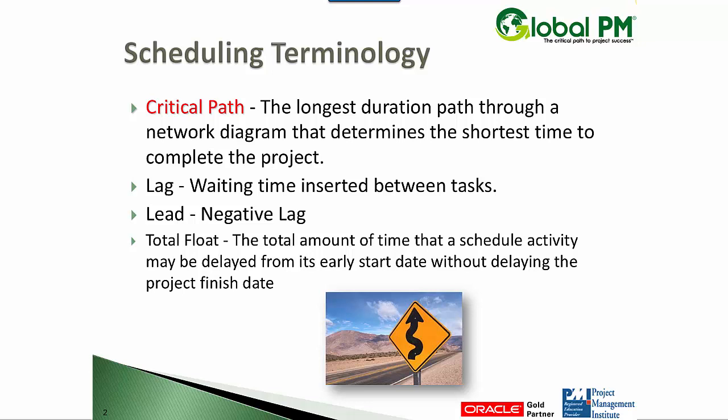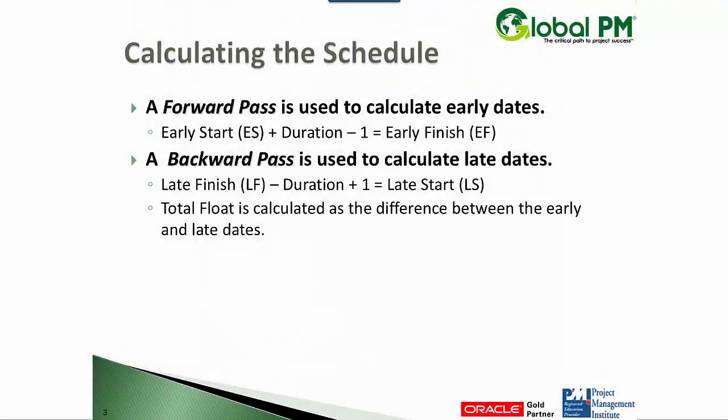Float. Float is the amount of time an activity can slip before delaying the project's finish date. So typically that's associated with total float. Free float, on the other hand, is slightly different. It's the amount of time an activity can slip before hitting its immediate successor. Normally, if somebody says how much float do we have on activity A1030, they're referring to the total float.